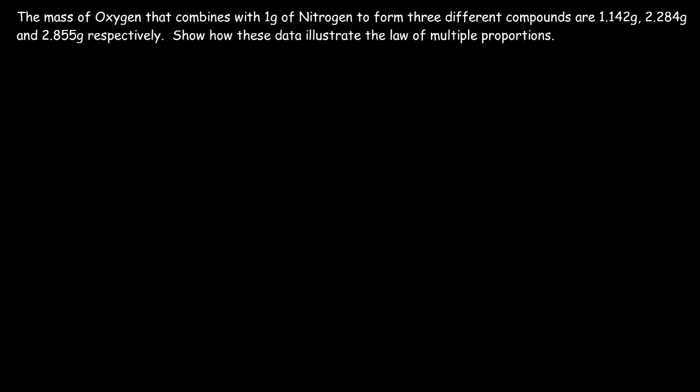Here's a practice problem: the mass of oxygen that combines with one gram of nitrogen to form three different compounds are 1.142 grams, 2.284 grams, and 2.855 grams respectively. Show how these data illustrate the law of multiple proportions. We have one gram of the first element, nitrogen, and the different masses of the second element, oxygen. We need to show that the masses of the second element can be reduced to small whole numbers.